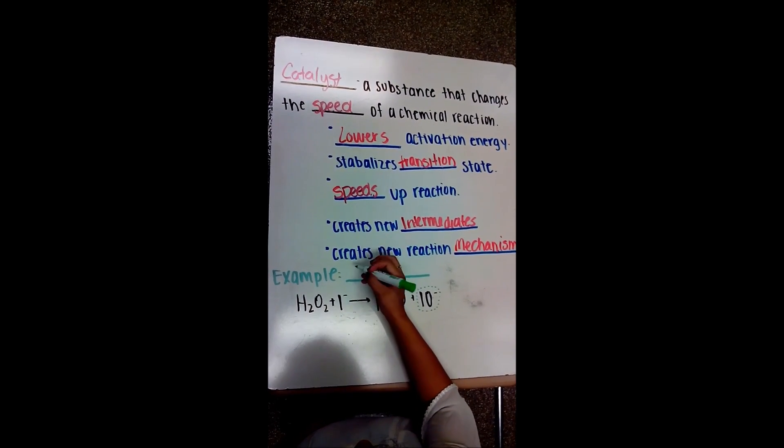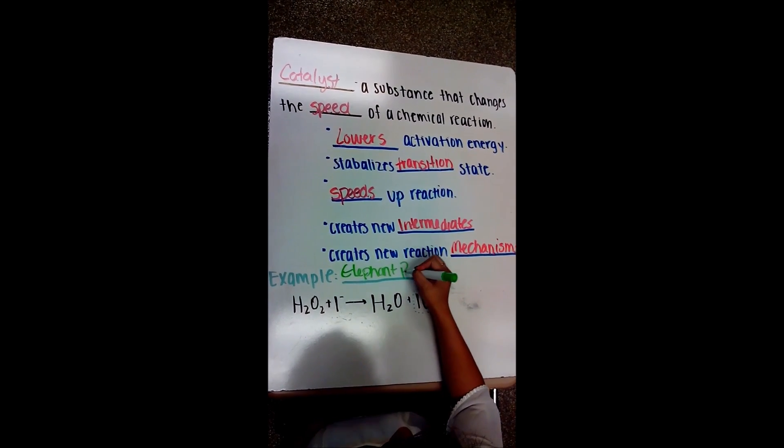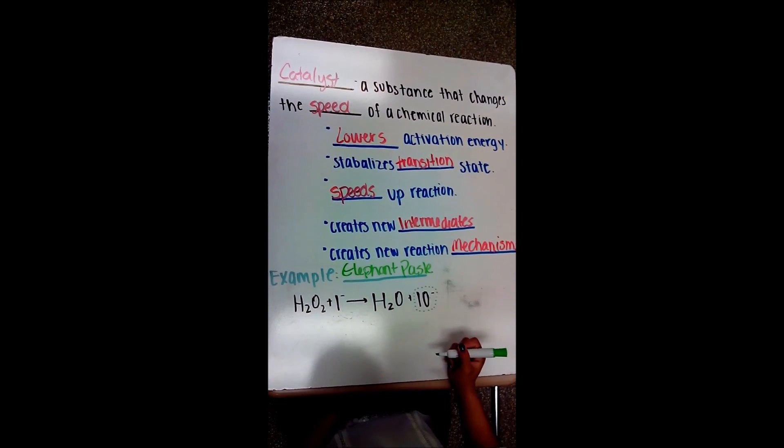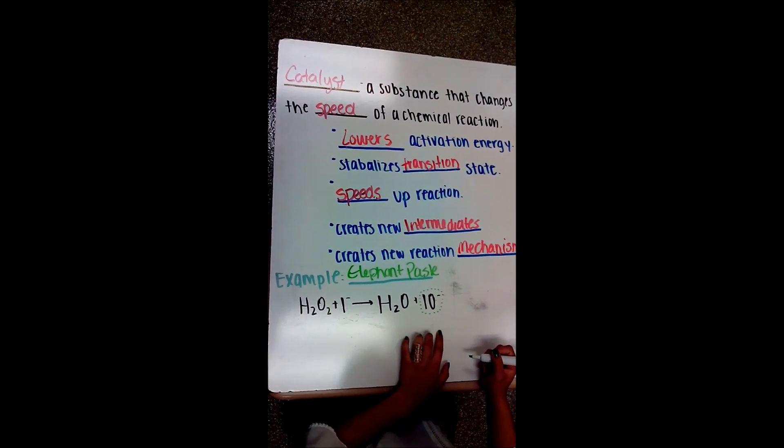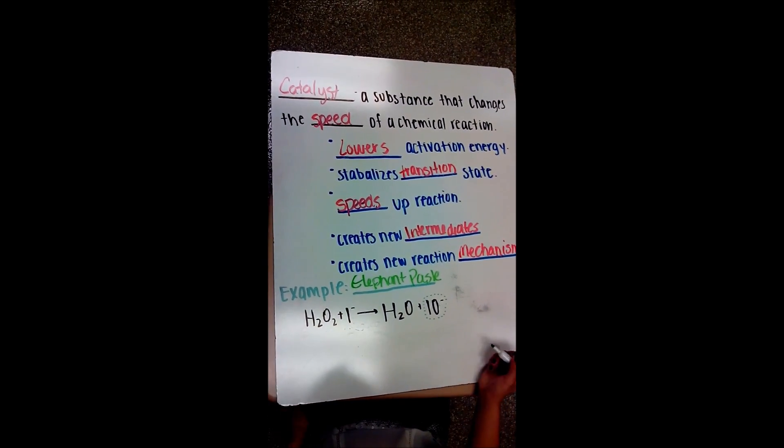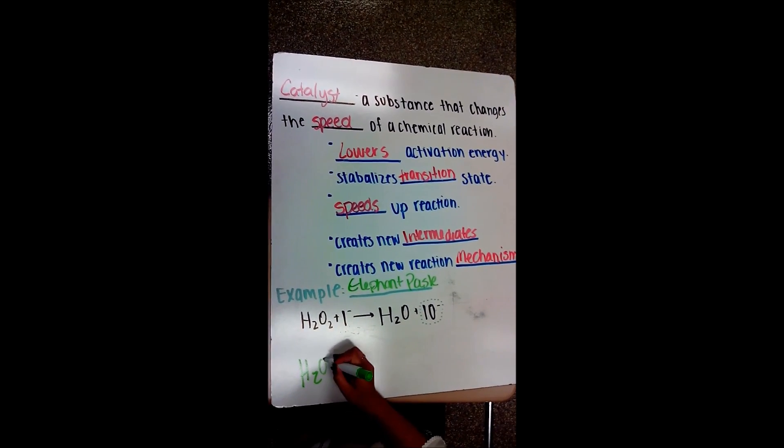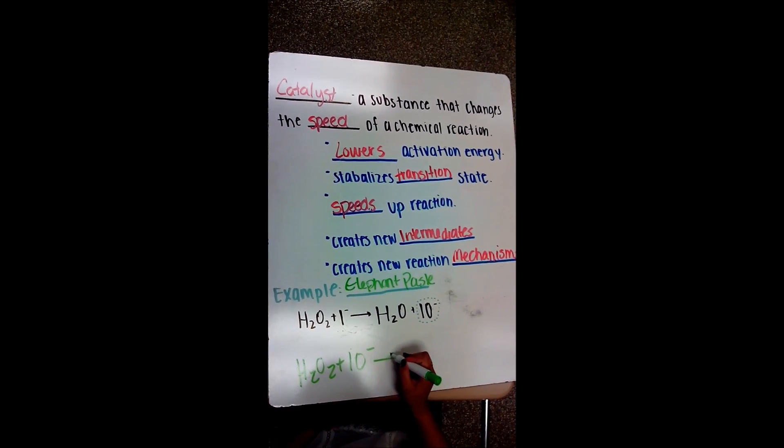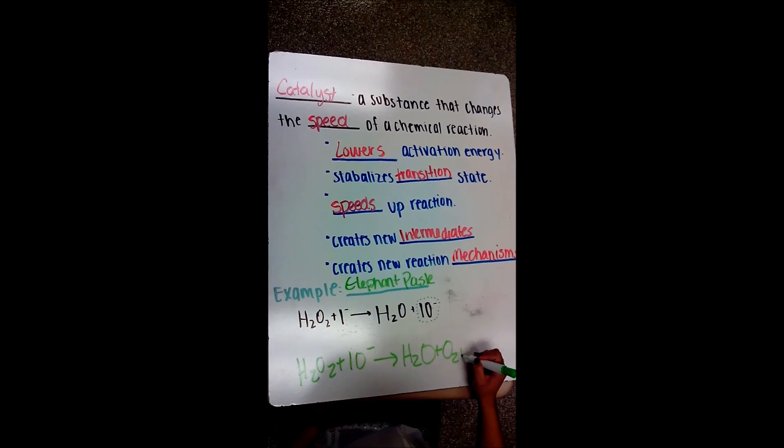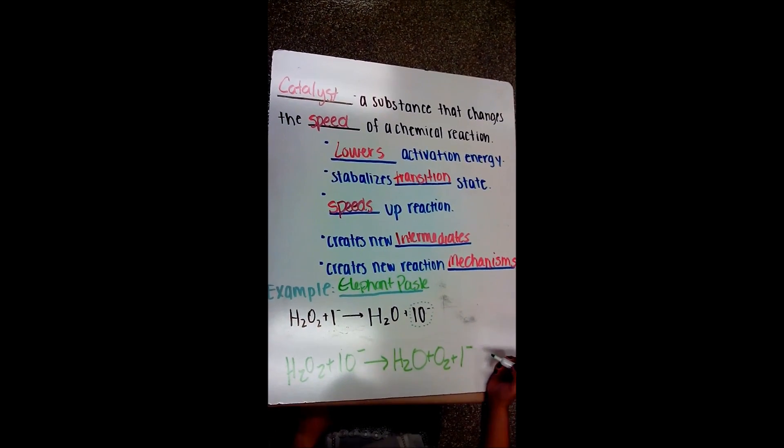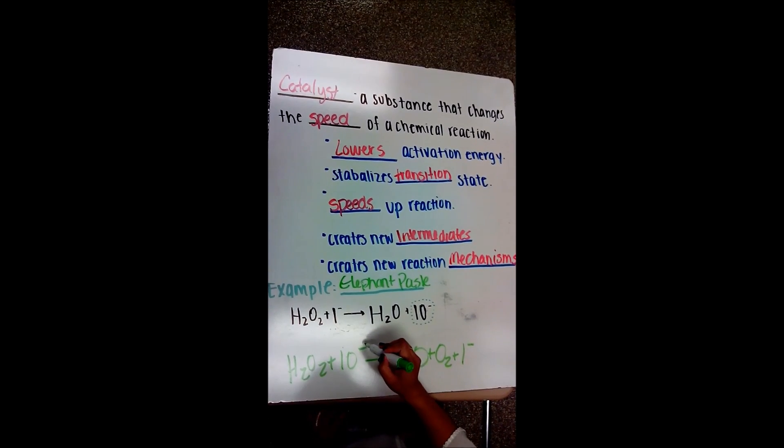Let's take a look at elephant paste. Elephant paste is usually a one-step reaction, and that's the equation. And adding a catalyst, it makes a one-step reaction into a two-step reaction. Because it creates new intermediates, which makes the one-step into a two-step reaction.